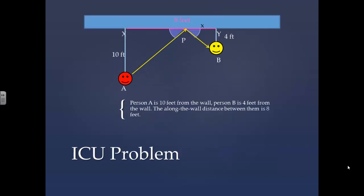Now it's time for a practice problem. Person A is 10 feet from the wall. Person B is 4 feet from the wall. The along the wall distance between them is 8 feet. Try this yourself any way you want. Pause the video before you go on. The answer is that x equals 2.28 feet.